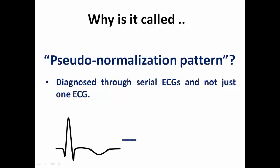Pseudonormalization is diagnosed by comparing serial ECGs — not just from one ECG alone. Please, you will not diagnose pseudonormalization just from a patient having T wave conversion. You should compare it to a previous ECG in order to say that the patient is having pseudonormalization, not just a positive T wave in a patient who is having chest pain. You can only suspect pseudonormalization without baseline ECGs to compare with.